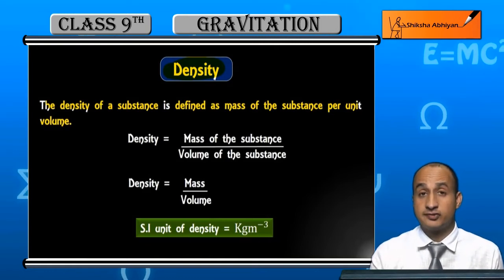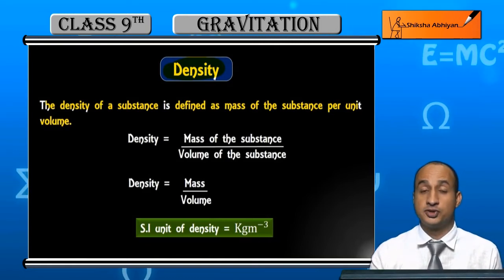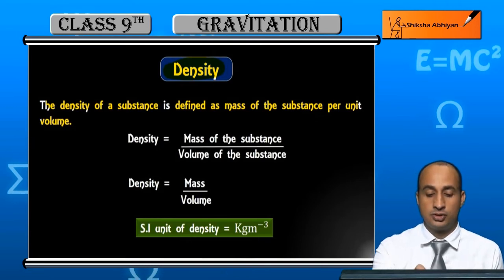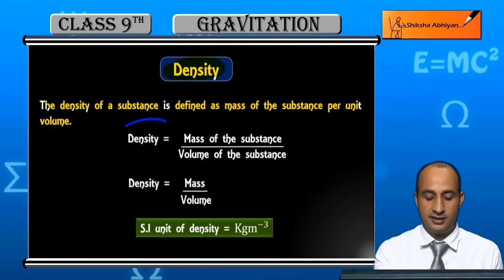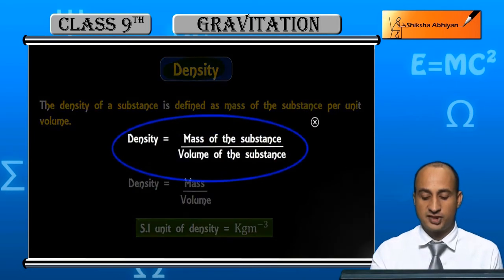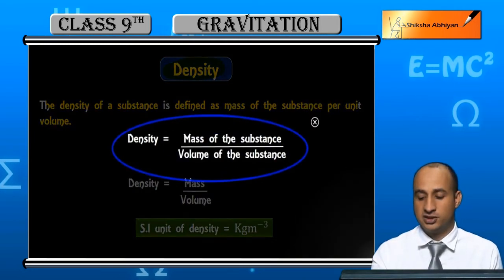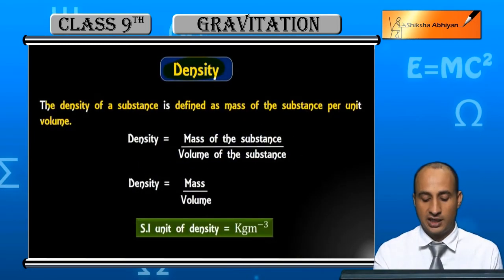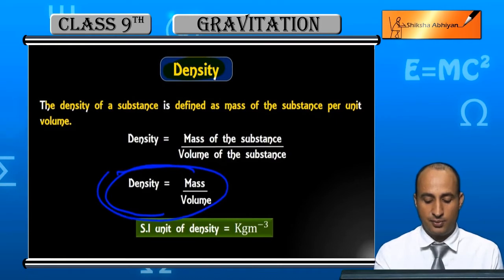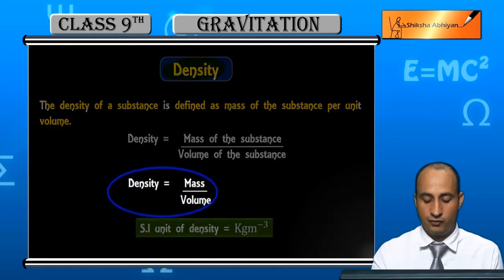If you divide the mass of a substance by its volume, you get density. So density is mass of a substance upon volume of a substance — in short, mass upon volume.